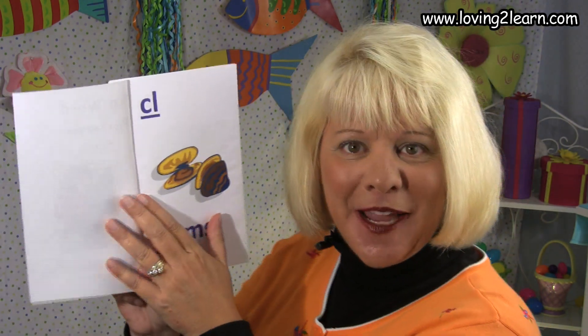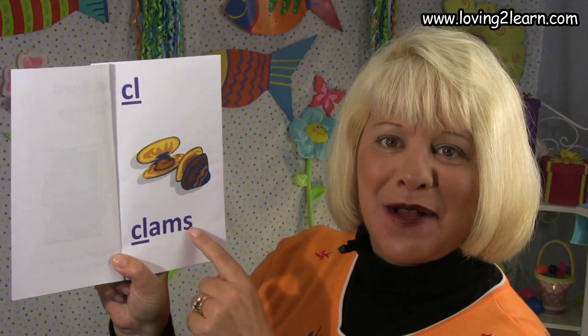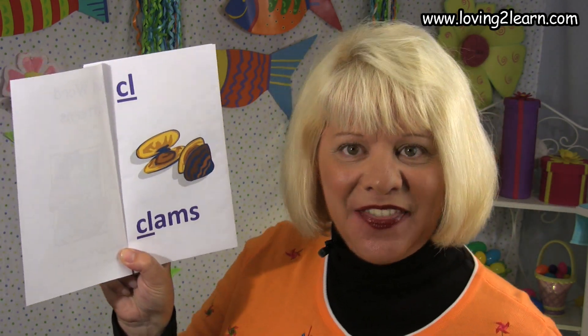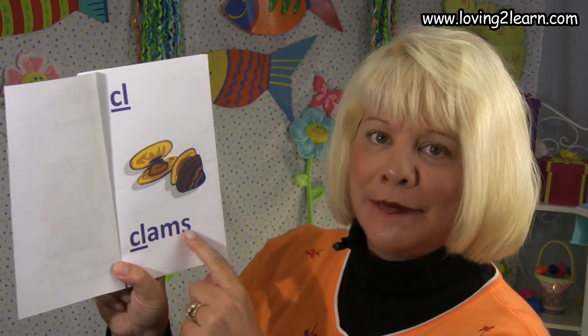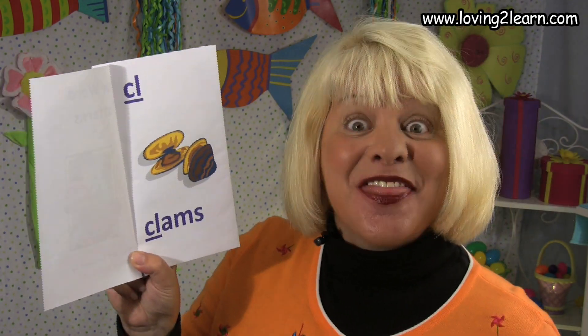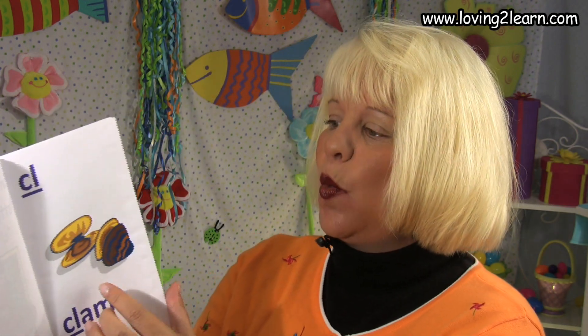We turn to the first page. We see the CL, and a picture of clams. Here's the word clams. Where do you see the CL in the word clams? That's right, it's in the beginning. So we're gonna read this page. CL, clams. Cl, cl, cl. Read it with me. CL, clams. Cl, cl, cl. One more time. CL, clams. Cl, cl, cl.